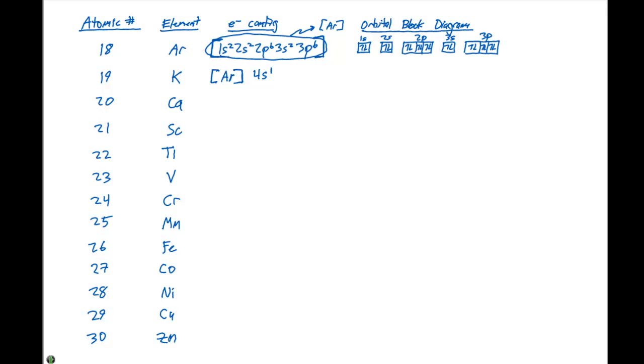So the orbital block diagram is going to be very very similar. And we can just say that for potassium it's going to be 4s1. For calcium we can abbreviate the noble gas core the same way. We need to add one more electron, and it's gonna be argon 4s2.